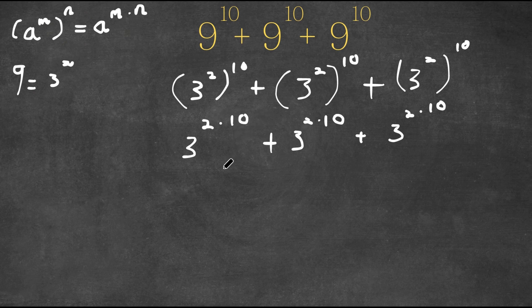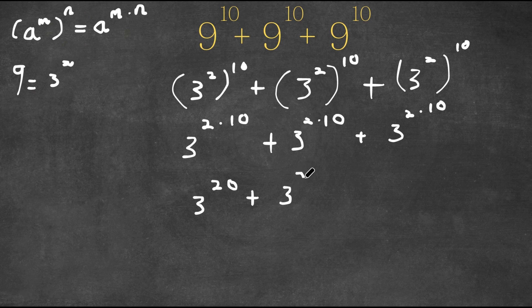Now, 2 times 10 is 20. So we have 3 to the power of 20 plus 3 to the power of 20 plus 3 to the power of 20.